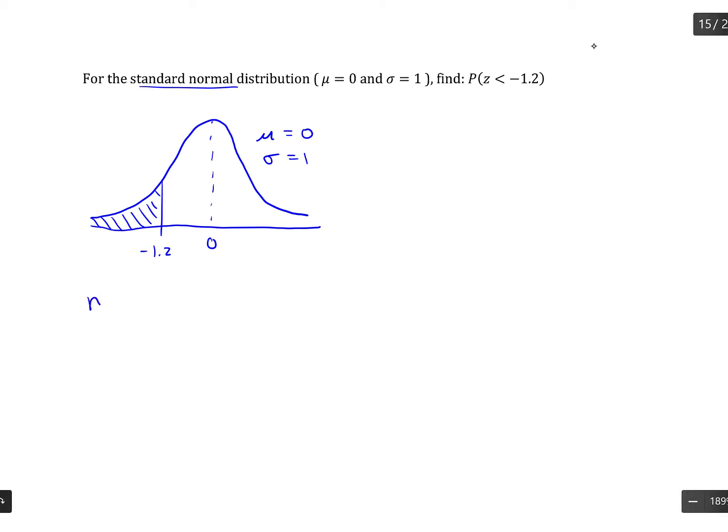Now to find the area of this shaded region, I use the normal CDF function. The lower bound of my shaded region is negative infinity, as far left as I can go, and the upper bound is negative 1.2.